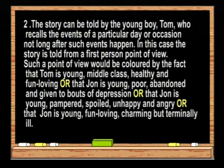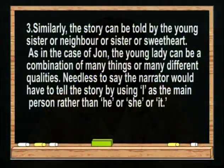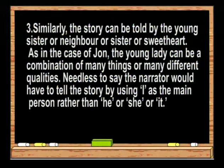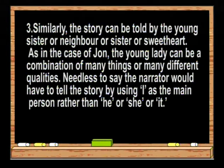Or that John is young, fun-loving, charming, but terminally ill — or any of a combination of a thousand qualities. Similarly, the story can be told by the young sister, neighbor, or sweetheart. The narrator would have to tell the story using 'I' as the main person rather than he, she, or it.